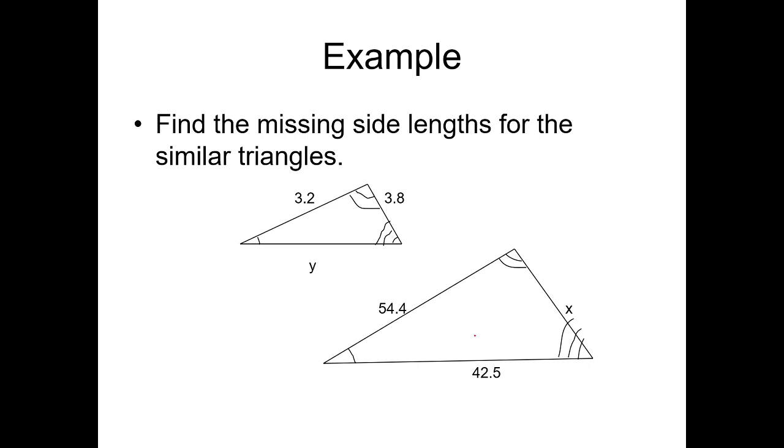Example. Since both of them are similar triangles, we can solve the value of X and Y. By using the ratio and proportion that we have learned, we can say that 3.2 over 54.4 is equal to 3.8 over X. Therefore, 3.2X equals 3.8 times 54.4. Divide both sides by 3.2. Therefore, your X is equal to, let's get our calculators.